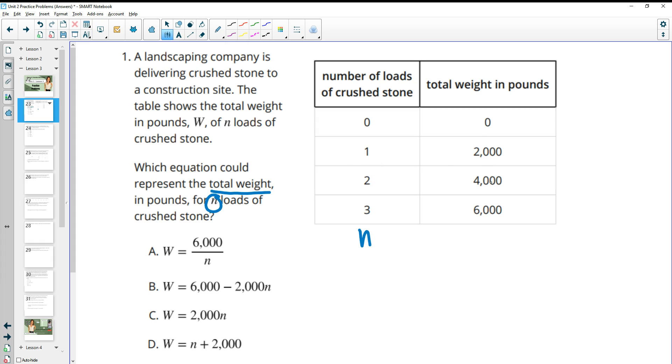Then two loads is 4,000 pounds or two 2,000s. Three loads is 6,000 or three 2,000s. So then N is going to be N times 2,000. So however many loads we have times 2,000, and another way we could write this is by writing the 2,000 first and then times it by the N, which we see down here as option C.